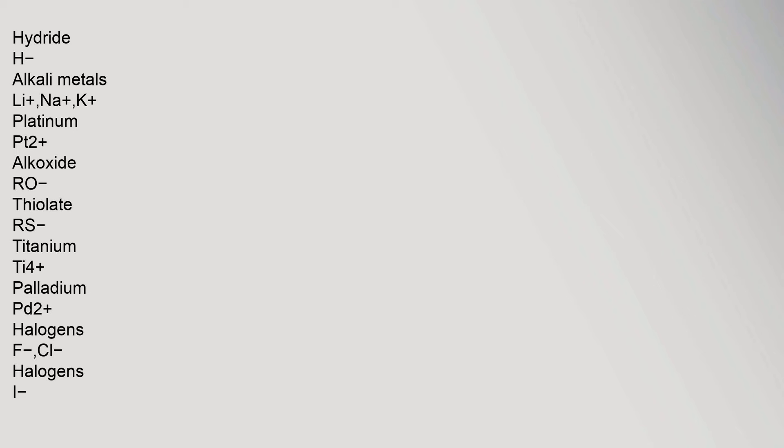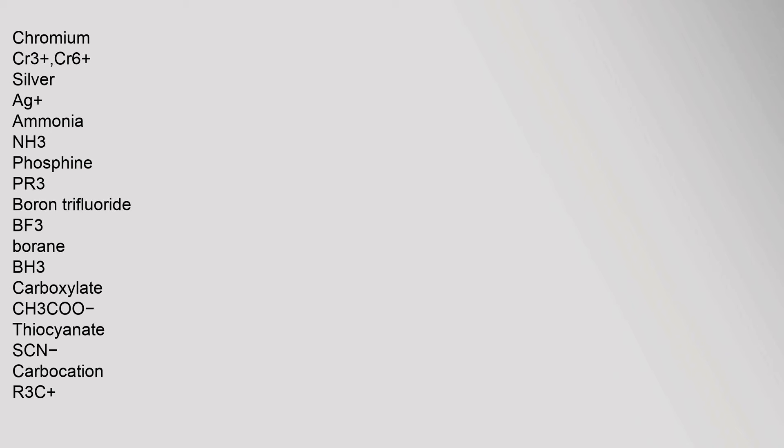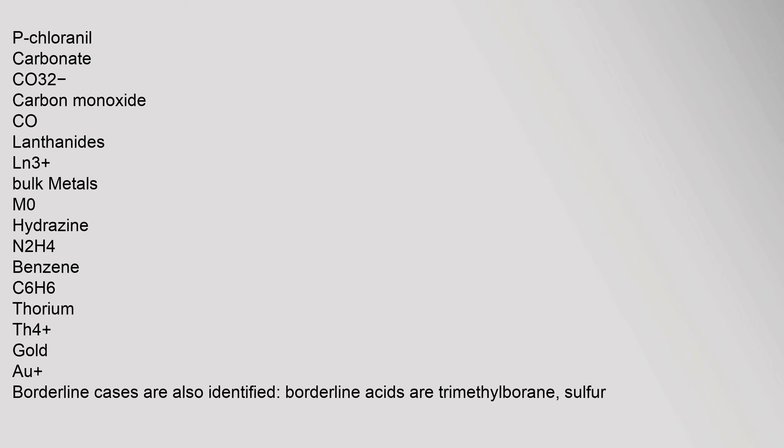Examples of hard species include hydride H⁻, alkali metals (Li, Na, K), alkoxides RO⁻, titanium Ti⁴⁺, halogens F⁻ and Cl⁻, chromium Cr³⁺ and Cr⁶⁺, ammonia NH₃, boron trifluoride BF₃, and carboxylate CH₃COO⁻. Soft species include platinum Pt²⁺, thiolate RS⁻, palladium Pd²⁺, iodide I⁻, silver Ag⁺, phosphine PR₃, borane BH₃, thiocyanate SCN⁻, carbocation R₃C⁺, carbon monoxide CO, bulk metals, benzene C₆H₆, and gold Au.